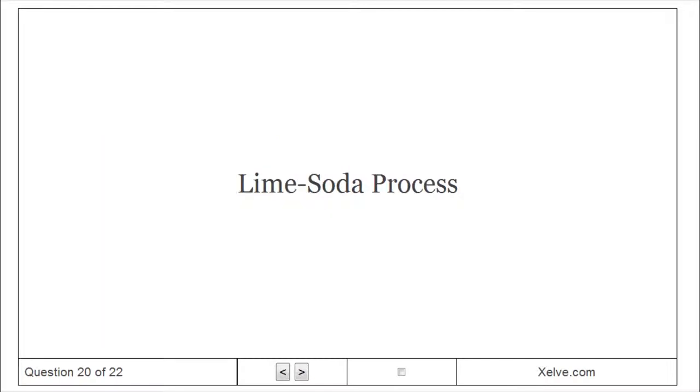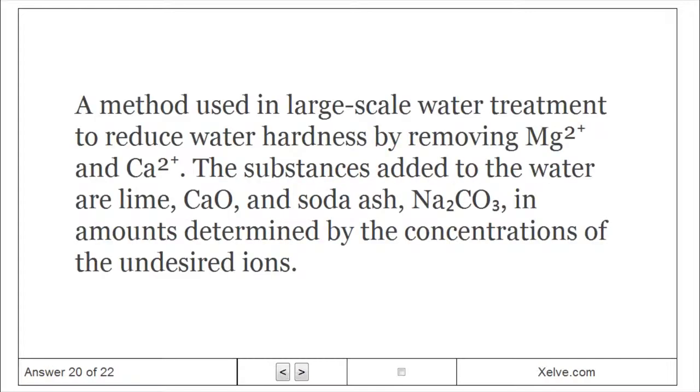Lime Soda Process: A method used in large-scale water treatment to reduce water hardness by removing Mg²⁺ and Ca²⁺. The substances added to the water are lime, CaO, and soda ash in amounts determined by the concentrations of the undesired ions.